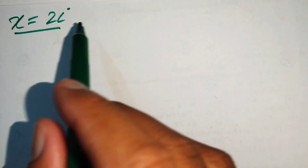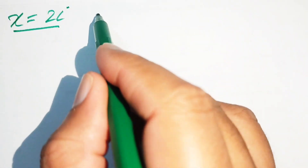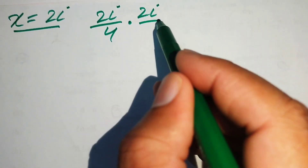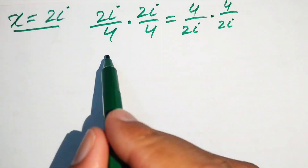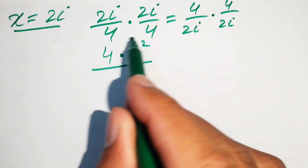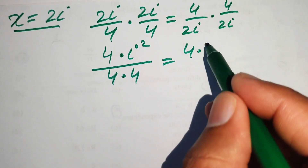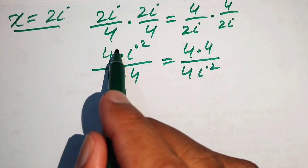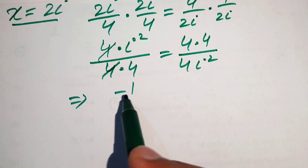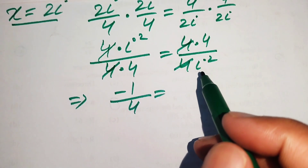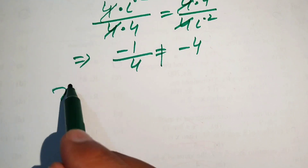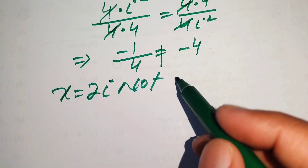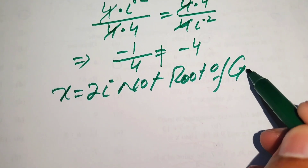Next we check x equals 2 iota. Substituting into both sides: left side gives 2 iota over 4 into 2 iota over 4, which yields 4 iota squared over 16. Using iota squared equals minus 1, this gives minus 1 over 4. Right side gives 4 over 2 iota into 4 over 2 iota, yielding 16 over 4 iota squared equals 16 over minus 4 equals minus 4. Since the two sides are not equal, x equals 2 iota is not a solution.